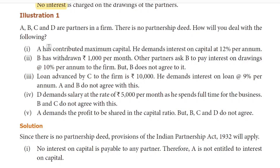How will you deal with the following? First, A has contributed maximum capital. He demands interest on capital at 12% per annum. There are 4 partners — A, B, C and D — and there is no partnership deed. Since there is no partnership deed, the provisions of the Indian Partnership Act 1932 will apply. First subdivision: no interest on capital is payable to any partner. Therefore, A is not entitled to interest on capital.